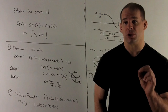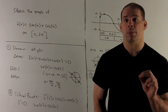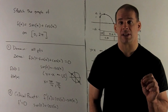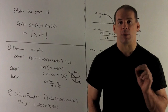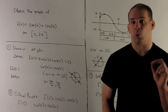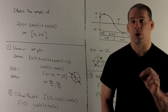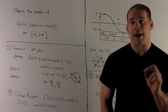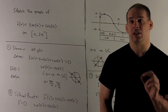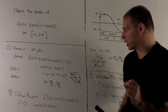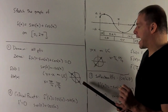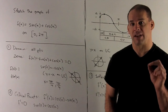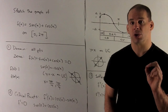Next, we look for zeros of our function. Setting our function equal to 0, we're solving for sin(x) = -cos(x). Sine is the y-value on the unit circle and cosine is the x-value, so we're looking where the line y = -x intersects the unit circle. Drawing the picture, we find the angles are 3π/4 and 7π/4. Those are our zeros.